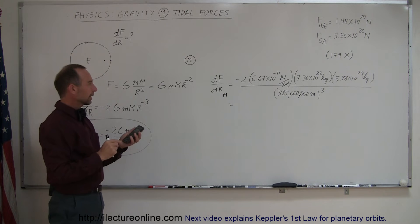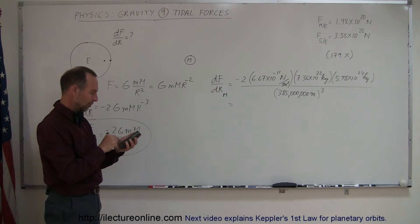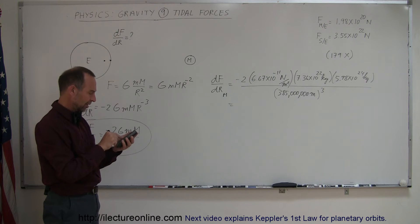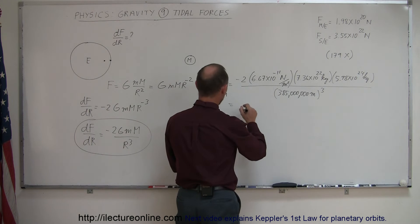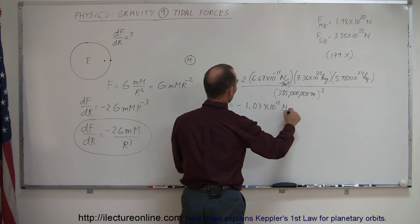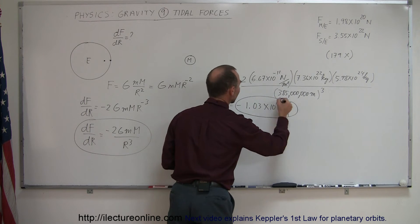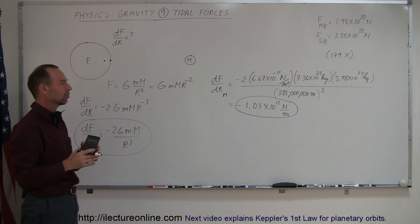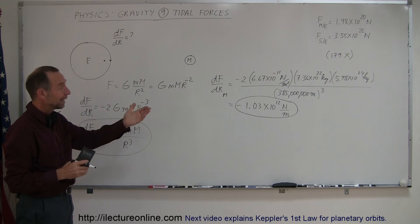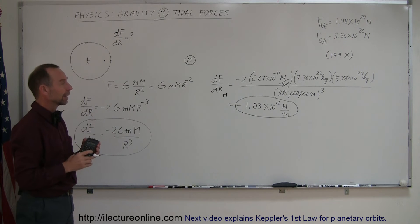Here's my calculator. So: 2 times 6.67e-11 times 7.36e22 times 5.98e24 divided by 385e6 cubed equals — and then we put a minus in front of that — and that gives us minus 1.03 times 10 to the 12th newtons per meter. So that is the change of the force with respect to distance. Every meter that you move farther away from the Moon, the force would be less by that amount.